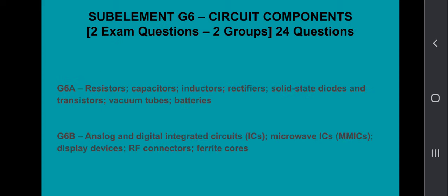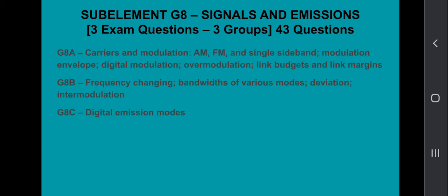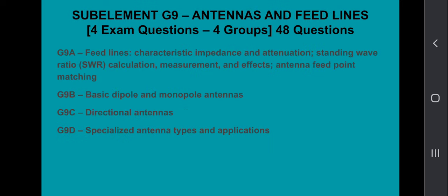Sub-element G6, circuit components. Two exam questions come from the two groups out of 24 questions. Sub-element G7, practical circuits. Three exam questions come from the three groups, 38 questions in total. Sub-element G8, signals and emissions. Three exam questions come from the three groups, 43 total questions.